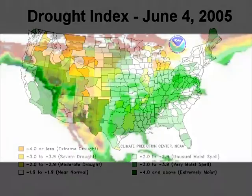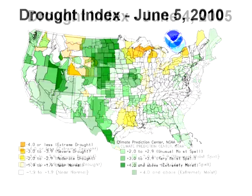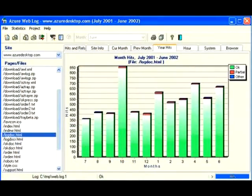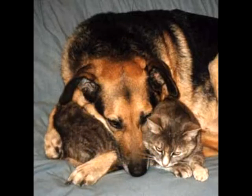Here are two other graphs, locally produced, indicating the actual rainfall for the first part of June in the years of 2005 and 2010. The job description of demographers and statisticians varies greatly. The discrepancy is with all datasets, whether it be how many people use Tide or how many people have cats and dogs.